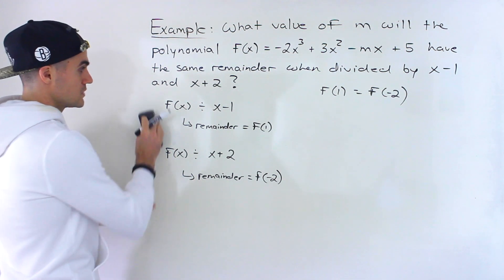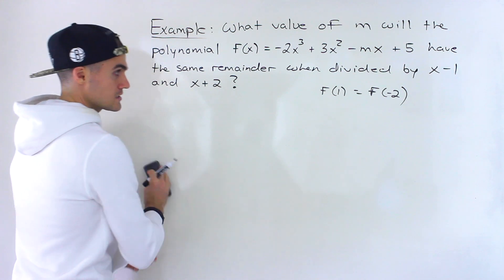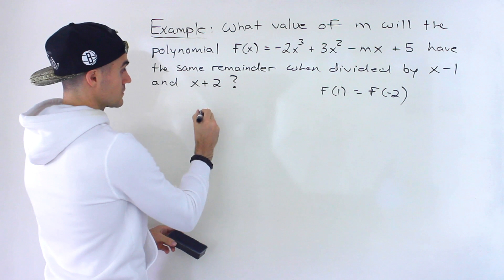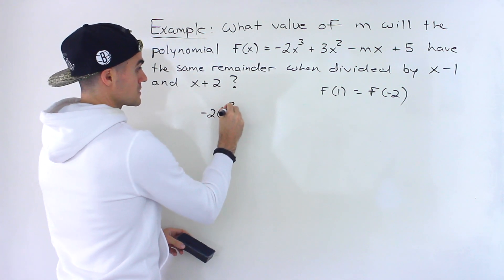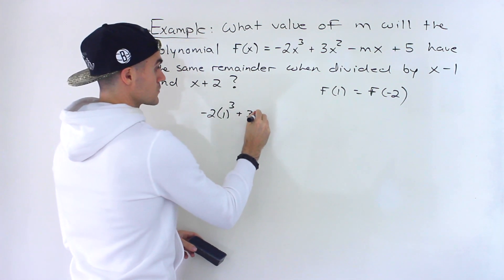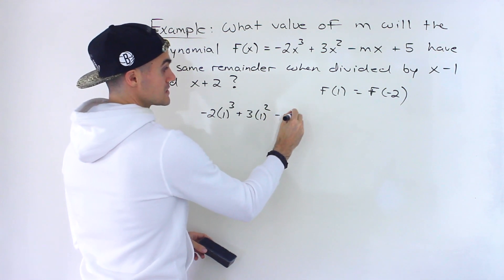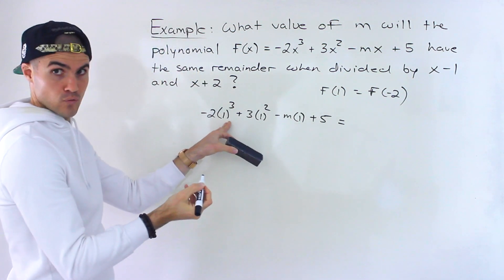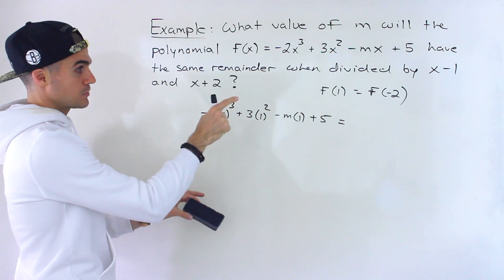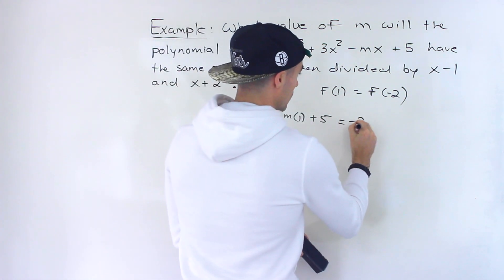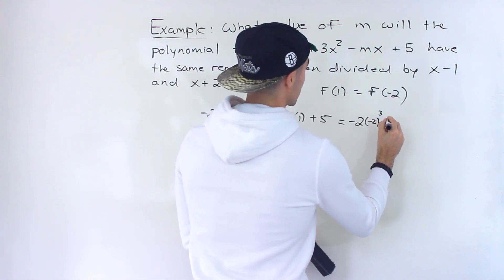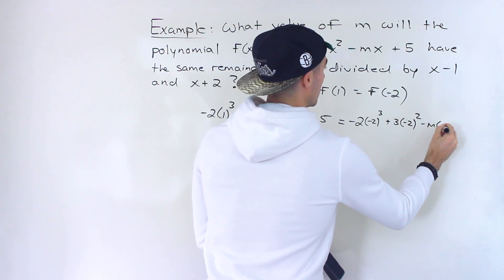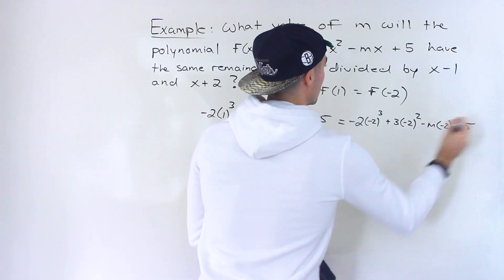From here we just have to plug in stuff. So what's f(1) going to be? Well, we would plug in 1 for all the x values. So we'd say -2(1)³ + 3(1)² - m(1) + 5. This is f(1) equals f(-2), so we'd plug in -2 for all the x values.